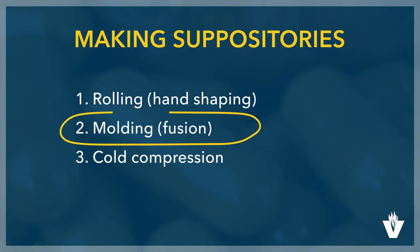The method we are going to do is the fusion method. The suppository base is melted, then the drug is dispersed or dissolved in the melted suppository base. The product is then poured into a reusable or disposable mold of the volume required based on the compounding recipe needed.